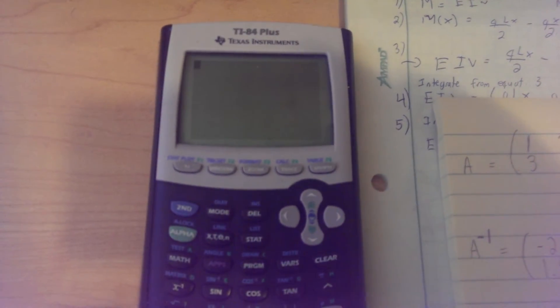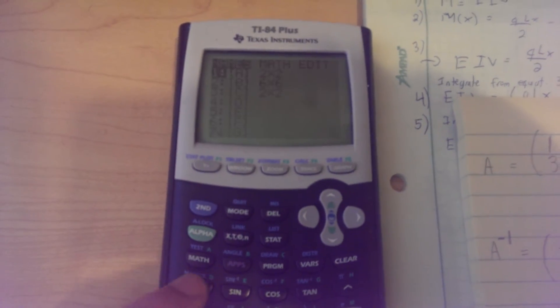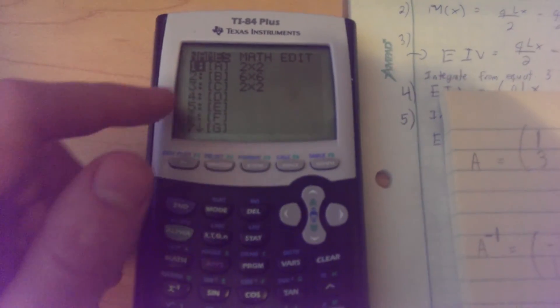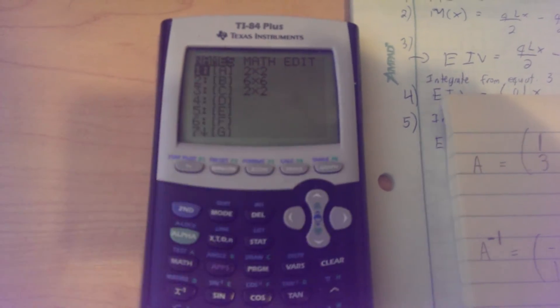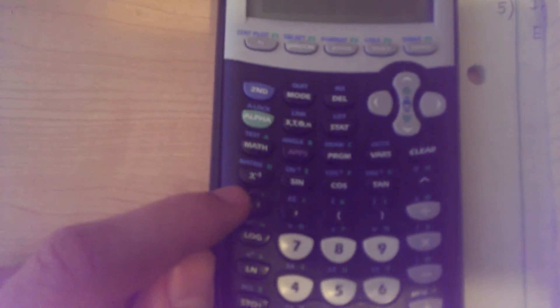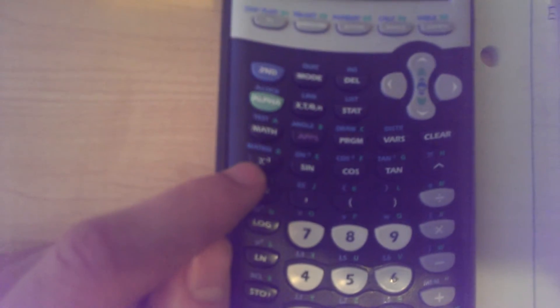Now what we want to do is go back and go 2nd, matrix, select the matrix we made which is A, obviously, the 2 by 2 one. And now you want to press the x to the negative 1, just above. I'm going to focus it there.